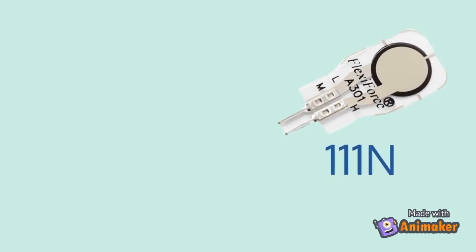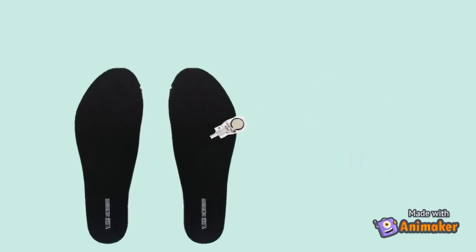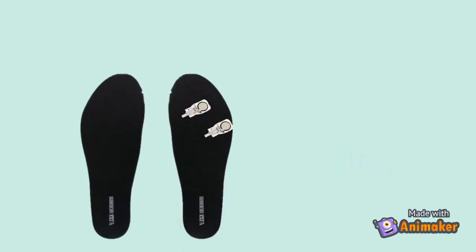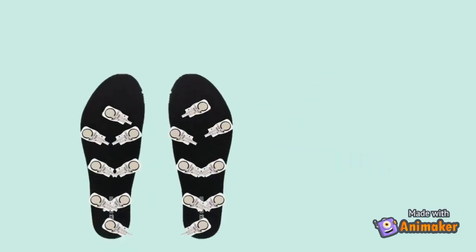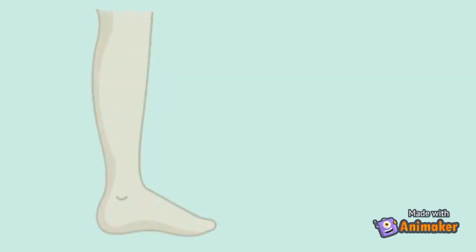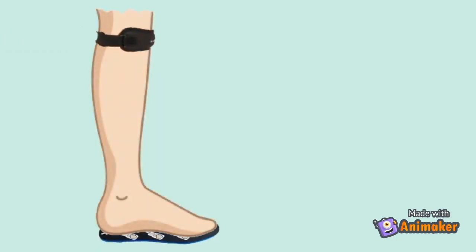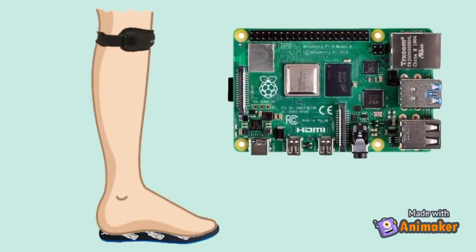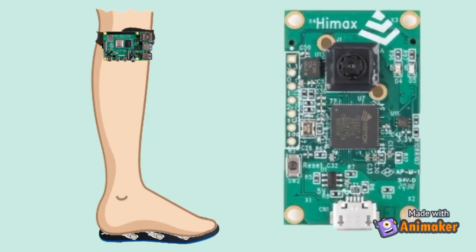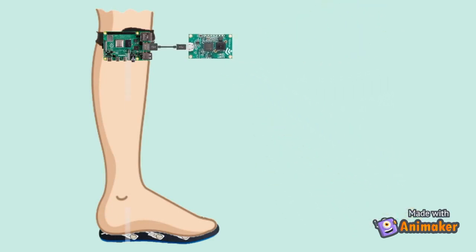To handle the foot pressure generated during walking, we chose the FlexiForce A301 pressure sensor with a maximum upper limit of 111 Newtons, and installed it on the insole according to the placement positions described in the paper. We then put a strap on our Raspberry Pi 3 and WII Plus so that users can fix them on their calves. The device and insoles are connected through cables.